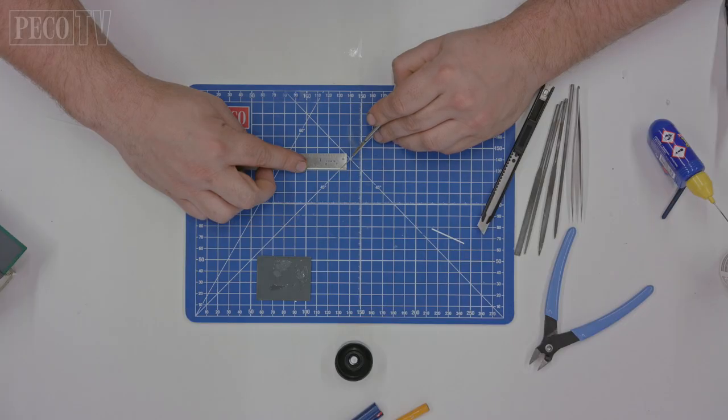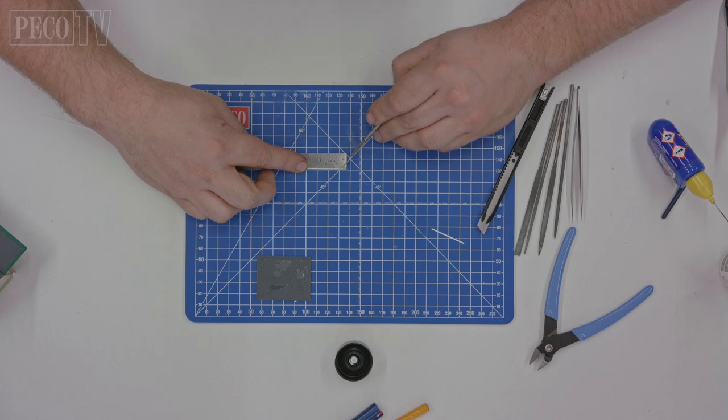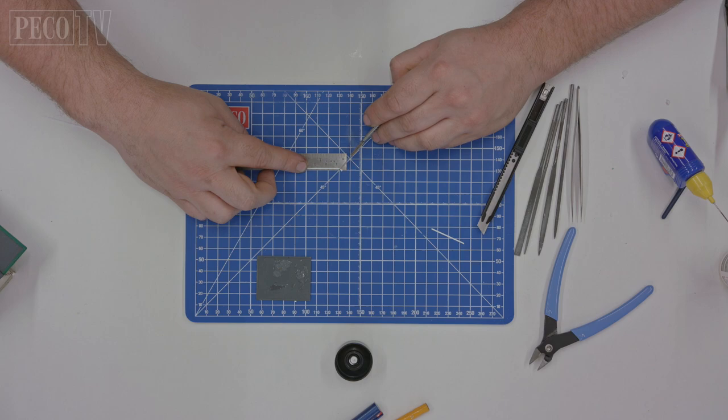To achieve a 45 degree angle for the corners of the wall capping I'm using the 45 degree angle marker on the Pico cutting mat and lining it up. So I get an accurate cut and I'm cutting through it on top of the ruler.